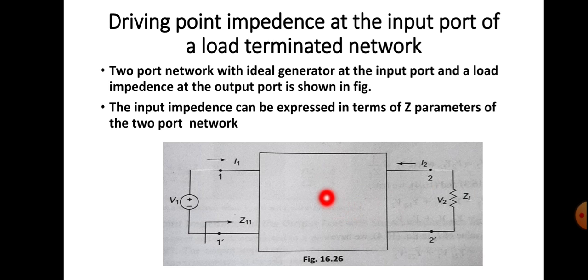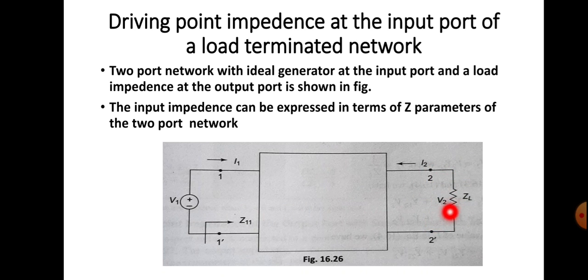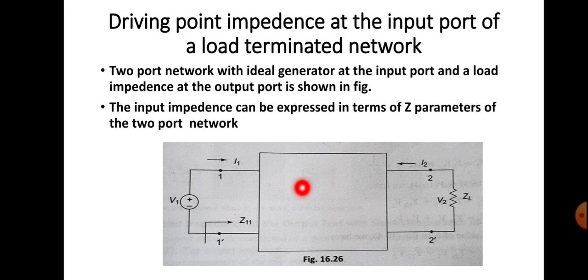Our aim is to represent the input impedance of this two-port network in terms of Z parameters. Here is the two-port network: the input port is 1-1' and the output port is 2-2'. We are terminating the output port 2-2' by a load impedance Z_L. The two-port network with an ideal generator at the input port and a load impedance at the output port is shown in the figure.